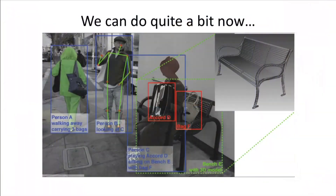That was the setup in which we started. Now, we have made enormous strides. We can more or less segment out these objects, mark these people — replace the human with a stick figure so you know where his arms and legs are. You can identify this object, the accordion, match the bench with a 3D model, and so on and so forth.